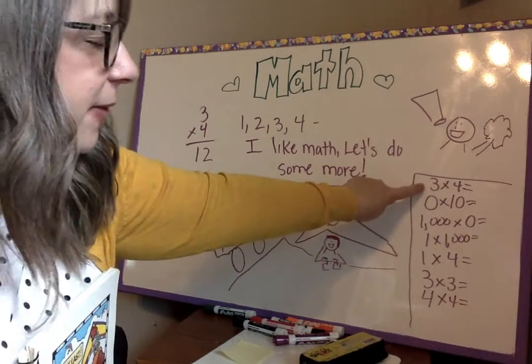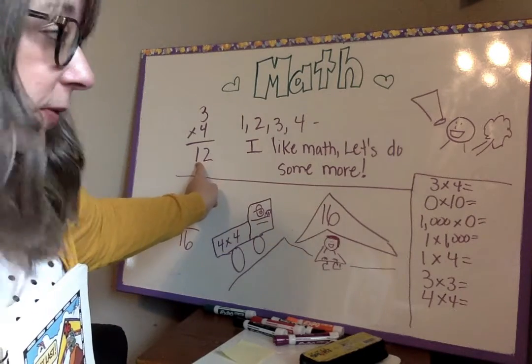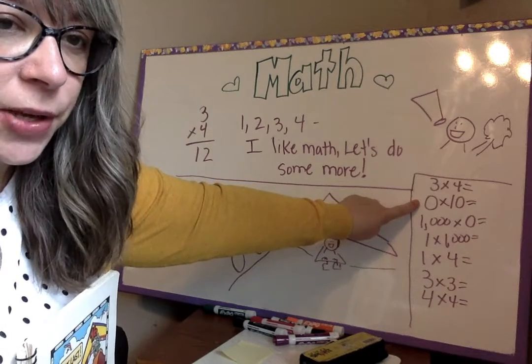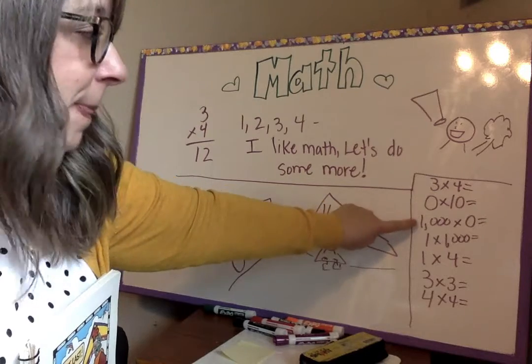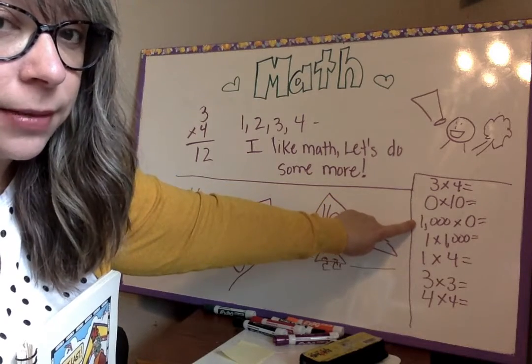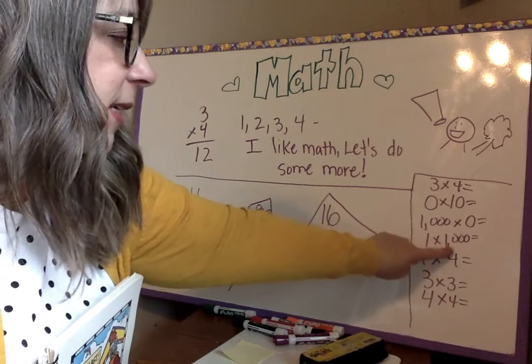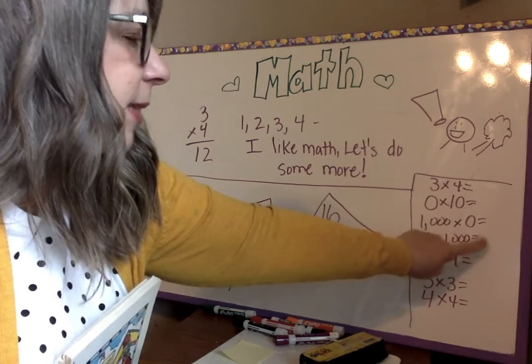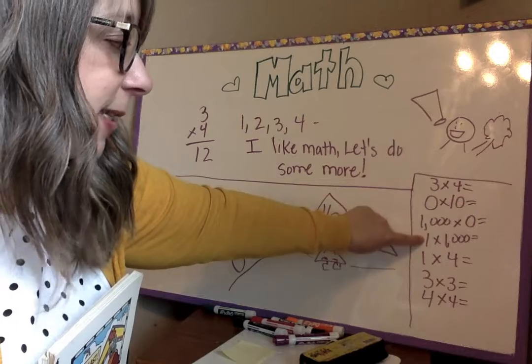So to practice our math facts, three times four is twelve. One, two, three, four. I like math. Let's do some more. The king takes over. So zero times ten would be zero. A thousand times zero would be zero because there's that king. One times a thousand, it's like the one is looking in a mirror. So one times a thousand is, I said that opposite, sorry. It's like the thousand is looking at the mirror. The one is the mirror. So one times a thousand is a thousand. The four is looking into the mirror. So one times four is four.